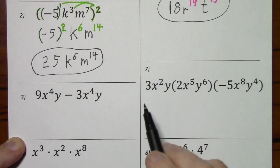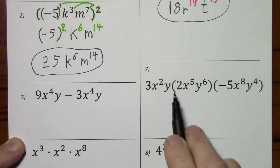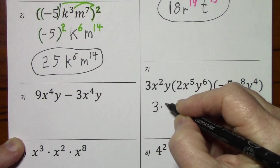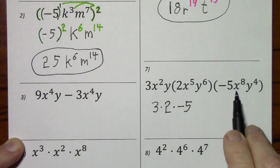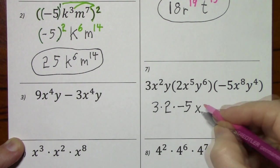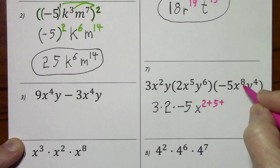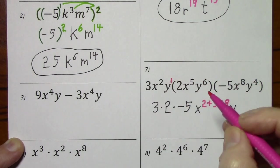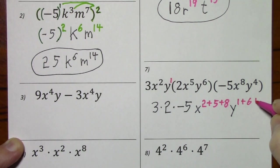Looking at number 7, this is all multiplication. Nothing is being added or subtracted. It will be 3 times 2 times negative 5. I'll write this out. And then x squared times x to the fifth times x to the eighth can be written x to the 2 plus 5 plus 8. And likewise, y to the first times y to the sixth times y to the fourth is simply y to the 1 plus 6 plus 4.